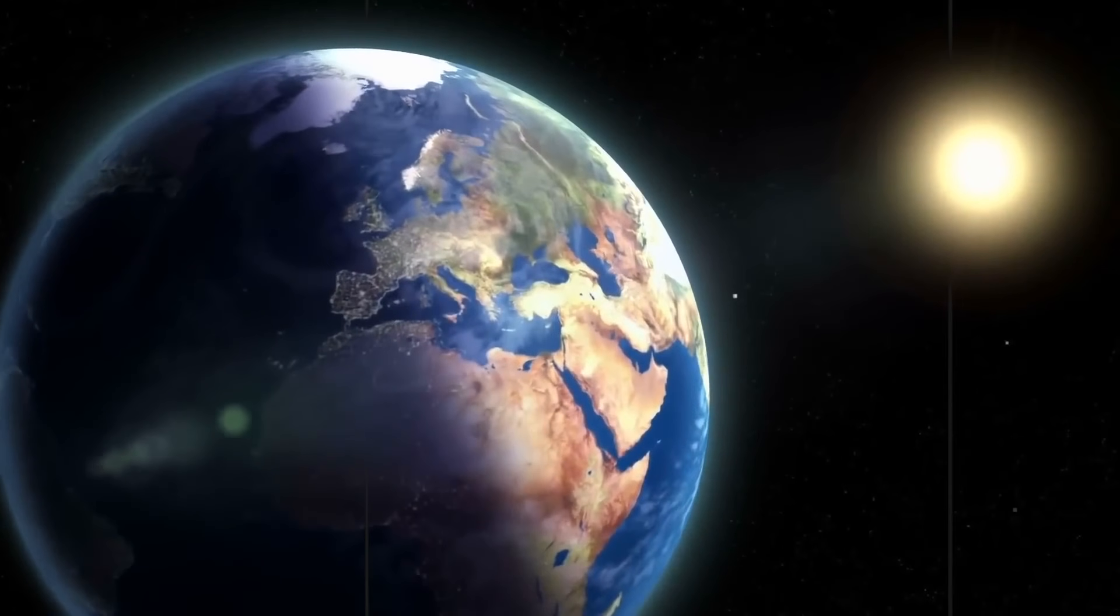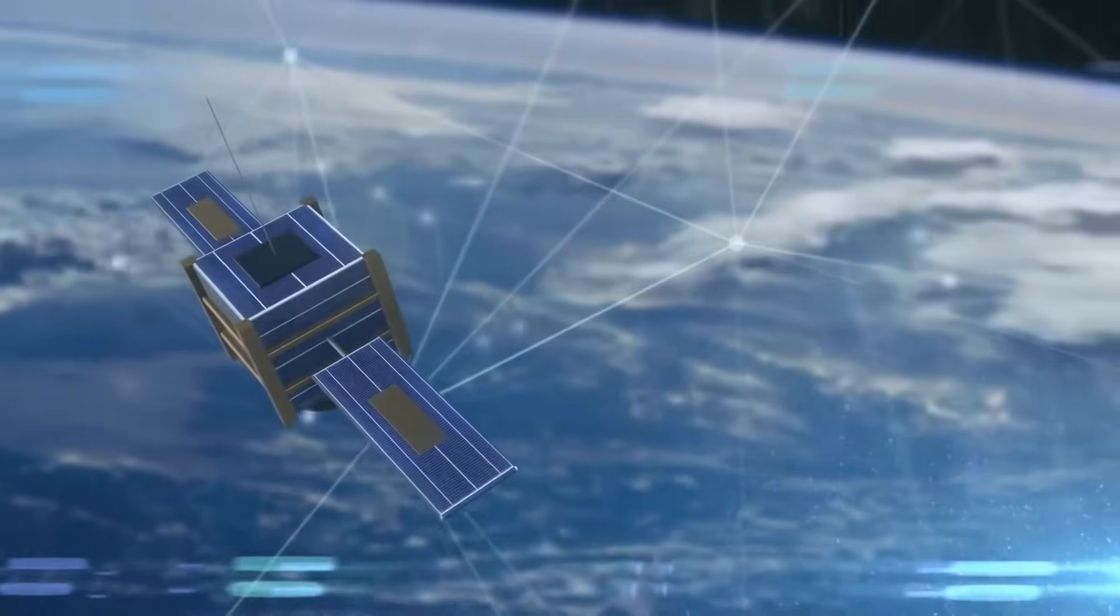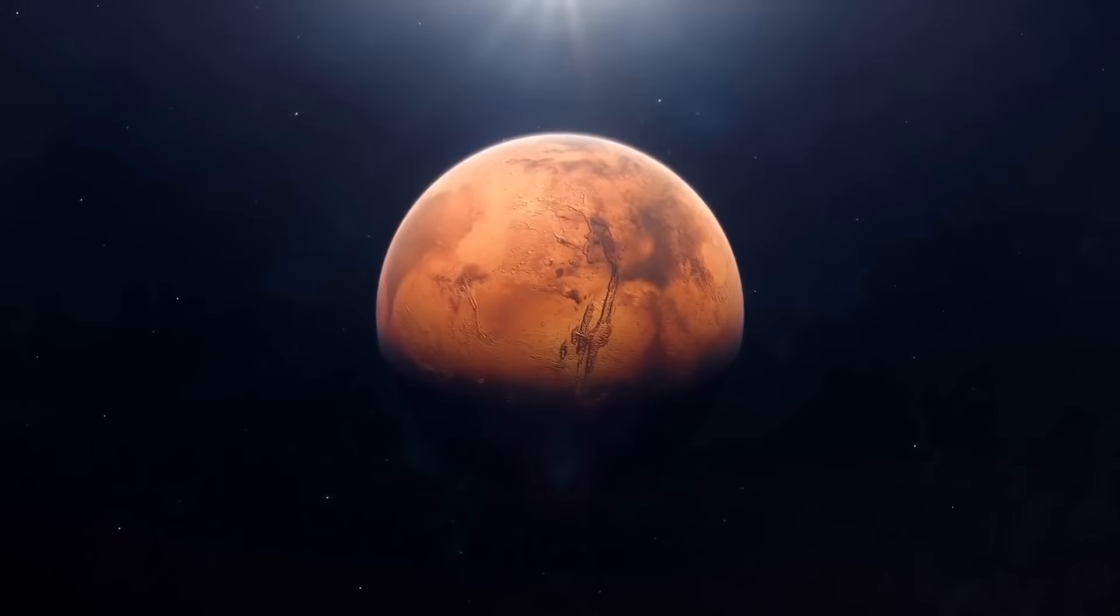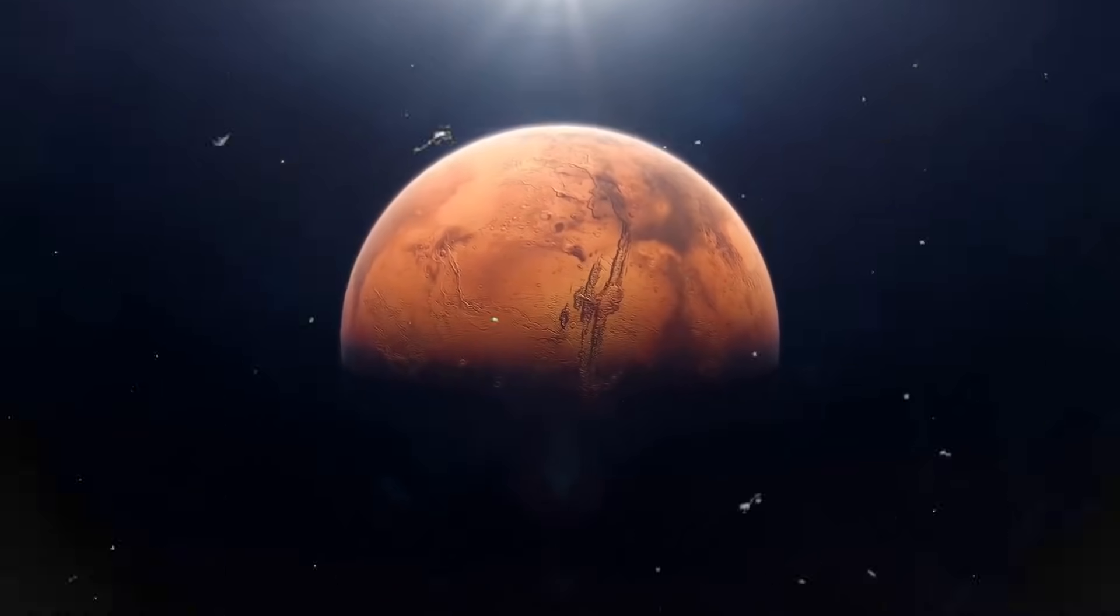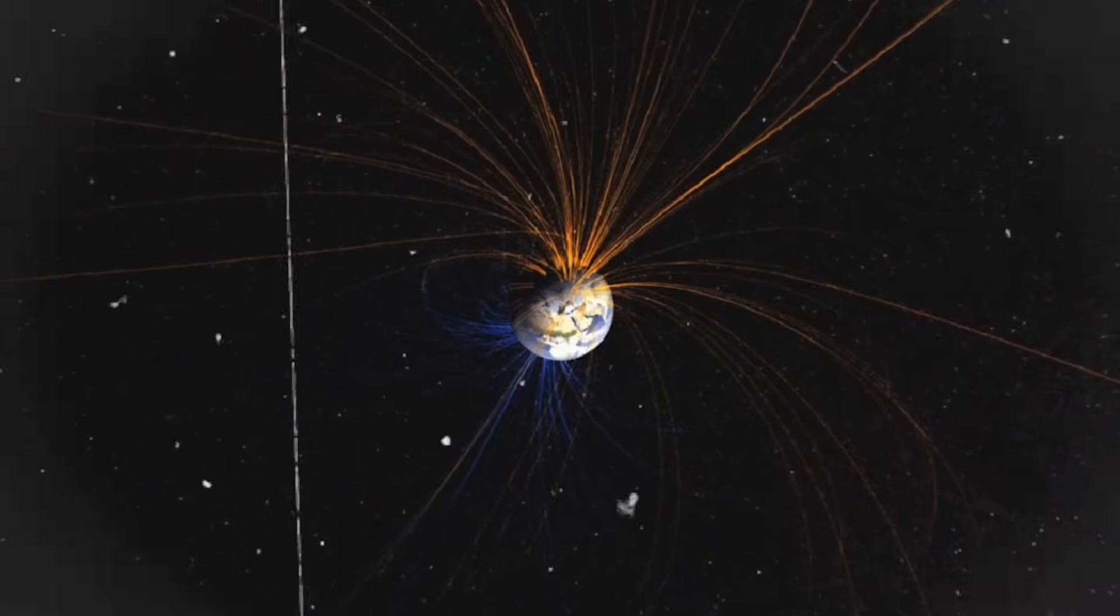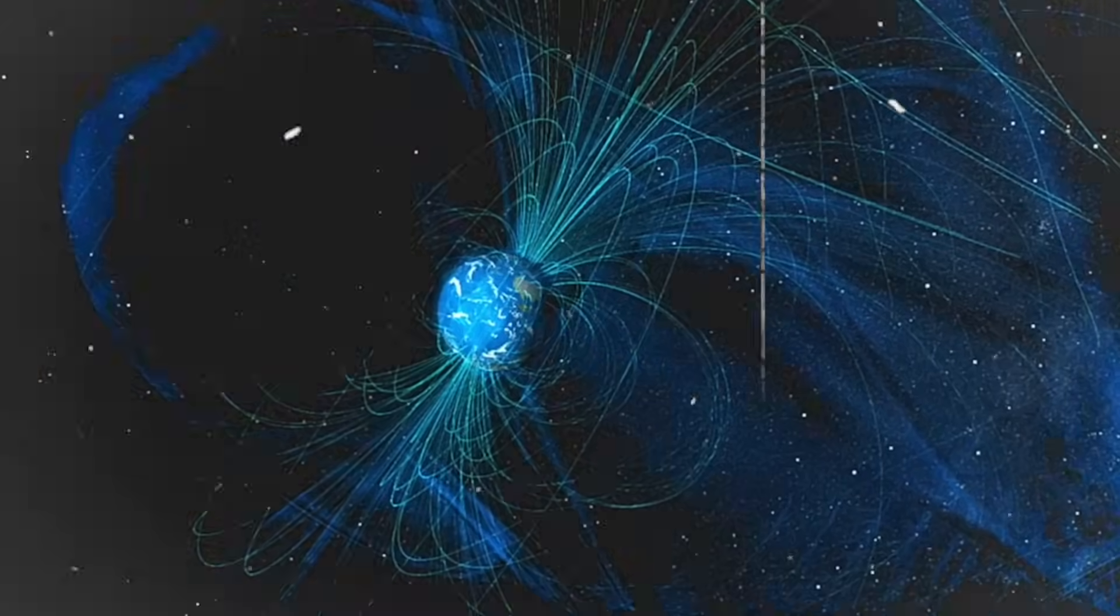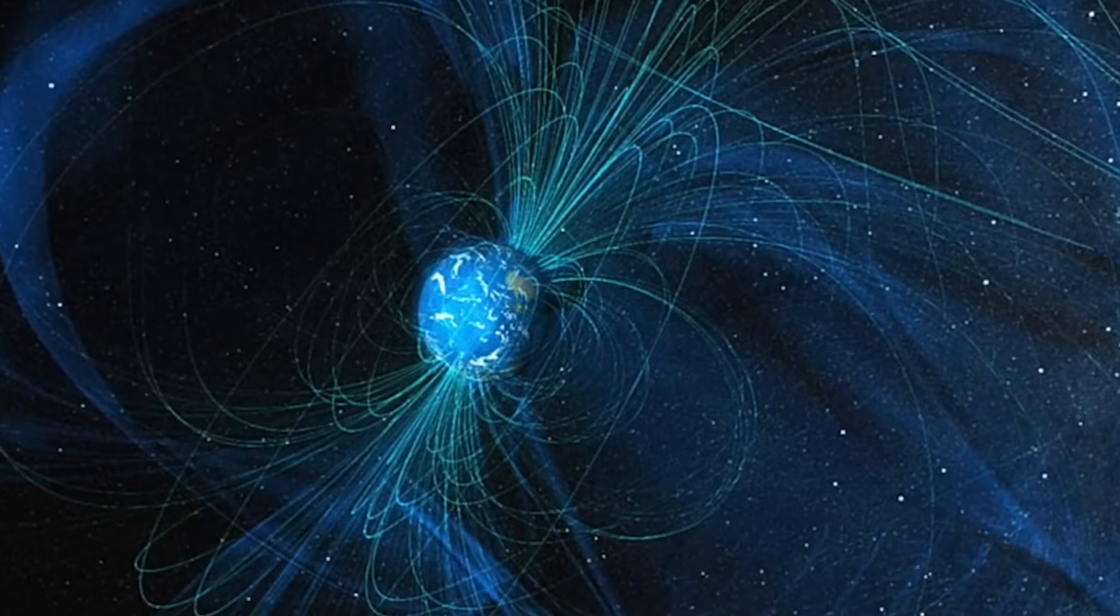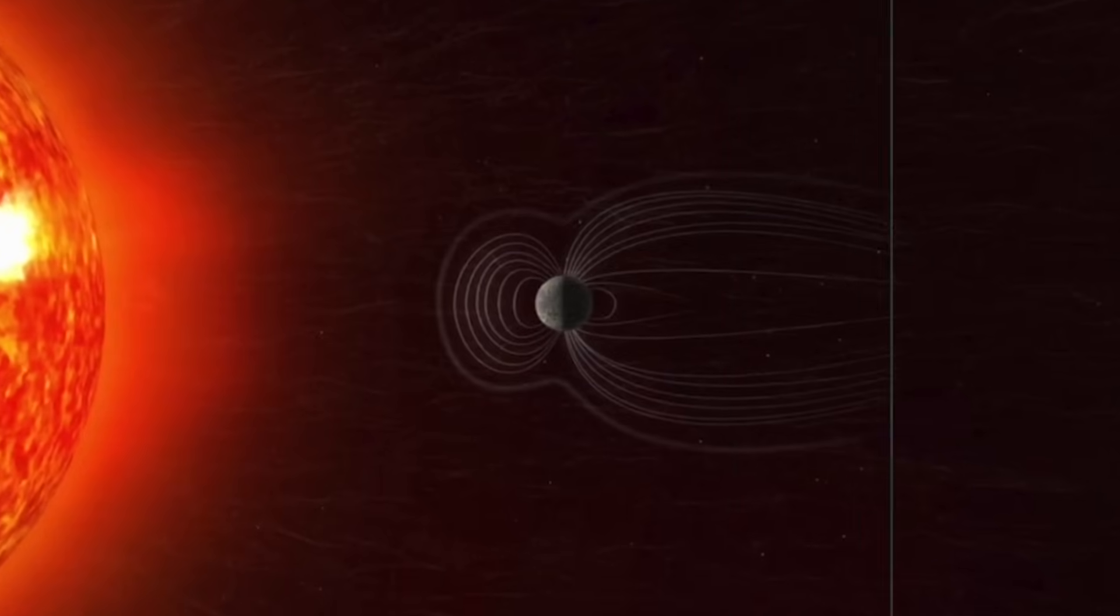The speed and nature of these changes - rapid weakening of the magnetic field, growth of the South Atlantic anomaly, and swift pole movement - collectively suggest that a geomagnetic reversal could be approaching sooner than previously anticipated. Earth's geological record provides substantial evidence of past geomagnetic reversals, traced through the alignment of magnetic minerals in rock formations and ocean floor sediments. These natural records resemble a tapestry of the planet's magnetic history.